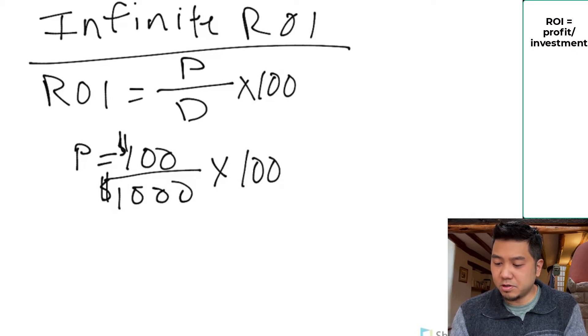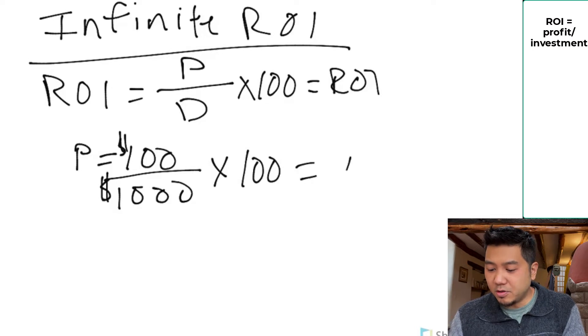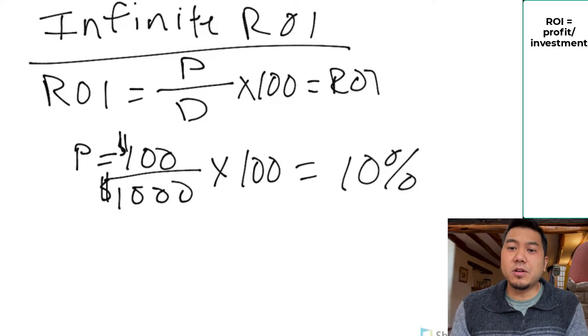You multiply that by 100, so 100 equals ROI. You multiply by 100 and you get 10%. So that would be your ROI.